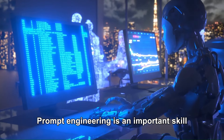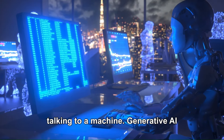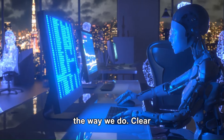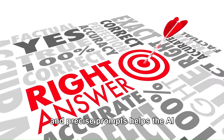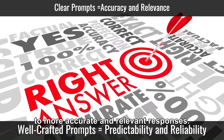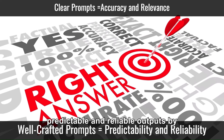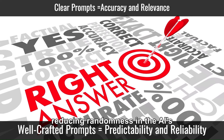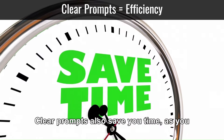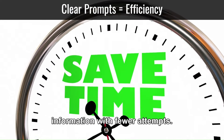Prompt engineering is an important skill to learn. Remember, you're talking to a machine. Generative AI doesn't understand human language context the way we do. Clear and precise prompts help the AI understand exactly what you need, leading to more accurate and relevant responses. Well-crafted prompts ensure more predictable and reliable outputs by reducing randomness in the AI's responses. Clear prompts also save you time, as you are able to get the desired outcome with fewer attempts.